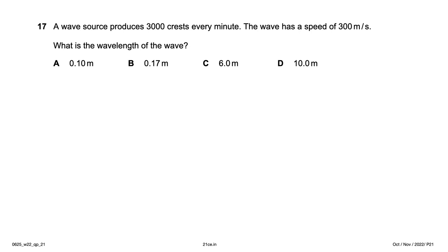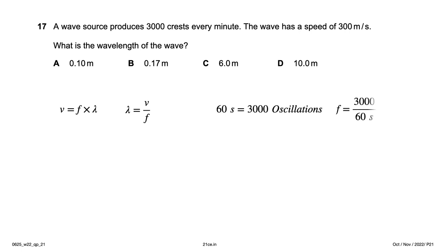A wave source produces 3000 crests every minute, and the wave has a speed of 300 m/s. What is the wavelength? Wavelength = speed / frequency. Frequency = 3000 crests / 60 s = 50 Hz. Wavelength = 300 / 50 = 6 meters, option C.